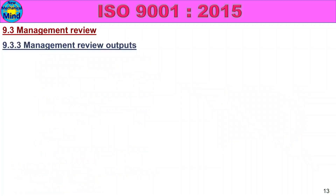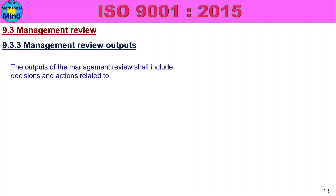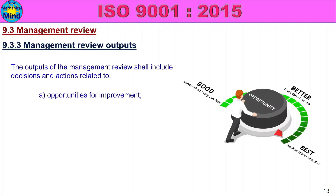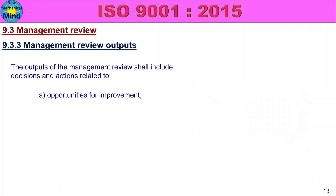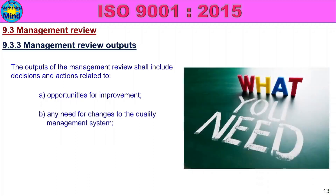9.3.3 Management Review Outputs. The outputs of the management review shall include decisions and actions related to management review. If the output is the decisions or the actions, opportunities for improvement — if you look at the process of improvement, you can see the opportunity. Any needs for changes to the quality management system — if you look at the changes in the quality management system, you can see the actions.